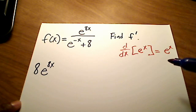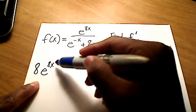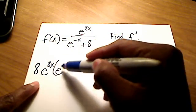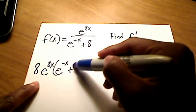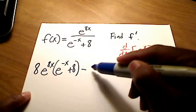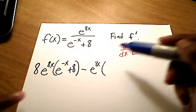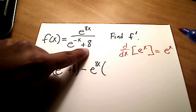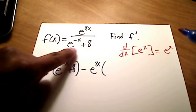So there's my f prime for quotient rule times g. I've got to multiply it by this denominator here, e to the negative x plus 8, minus f, which is my numerator, e to the 8x, times the derivative of my denominator.